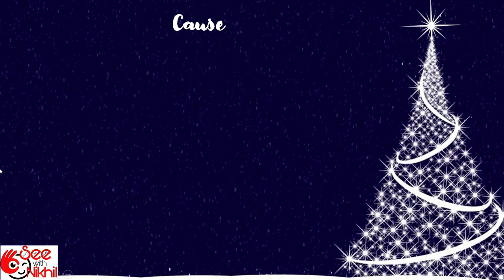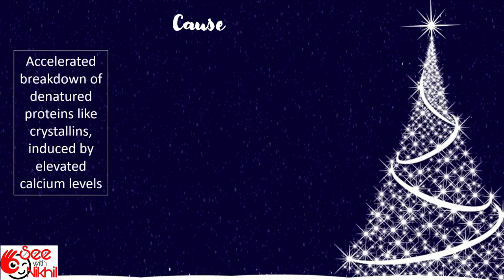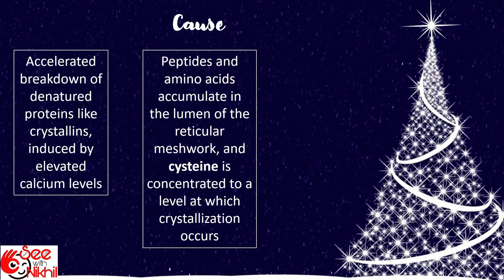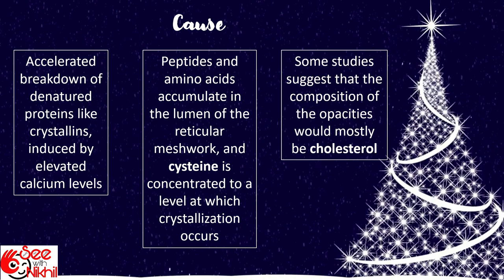There are different theories regarding what causes a Christmas tree cataract. One theory involves accelerated breakdown of denatured proteins like crystallins, induced by elevated calcium levels in the lens. Peptides and amino acids accumulate in the lenticular meshwork of the lens, and cysteine is concentrated to a level at which crystallization occurs. Some studies also suggest that the composition of opacities would mostly be cholesterol.